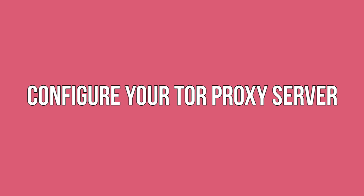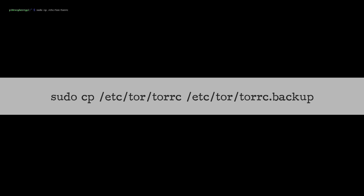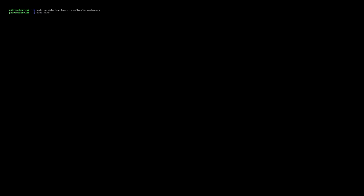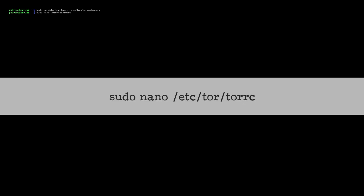Configure your Tor proxy server. Set up your proxy server by making some changes to Tor's configuration file. Before editing this Tor file, it's a good idea to create a backup. Now that you have a backup, create a simple configuration that will expose the Tor SOCKS proxy service on port 9050 and accept connections from the local LAN. To open the Tor configuration file for editing, run the following command: sudo nano /etc/tor/torrc.